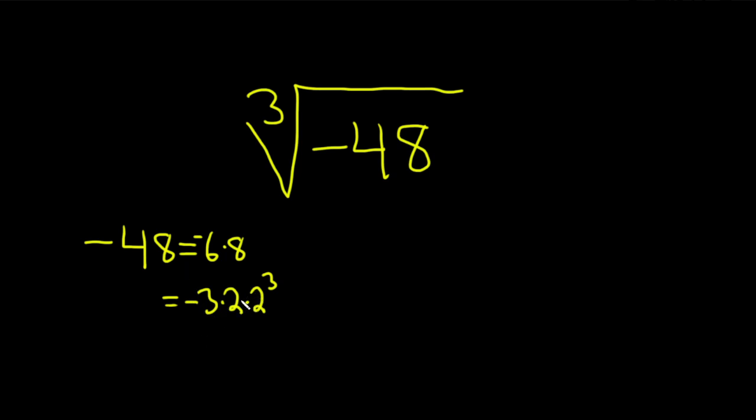And you could keep going here, like you can write this as 2 to the fourth, but that's not going to help us because we want powers of 3. So let's just leave it exactly like this and go for it. So we have the cube root of negative 3 times 2 times 2 cubed.